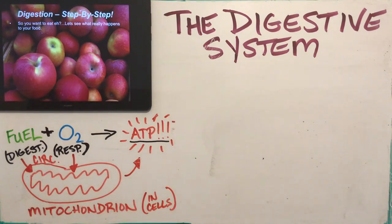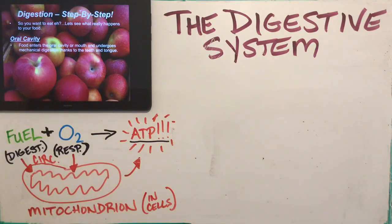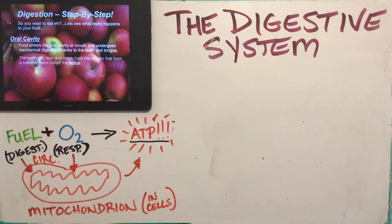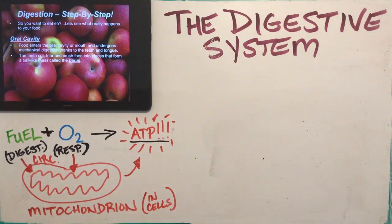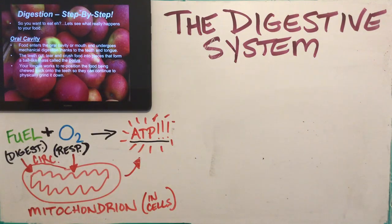Now we'll go through the digestive system step by step, looking at each part and its function. The first is the mouth, or oral cavity — that's a fancy word for mouth — and this is where food enters the body. You chew it up; the tongue repositions the food on the teeth, and the teeth tear, cut, and crush the food into pieces that form a ball-like mass called a bolus. Your tongue repositions the food so your teeth can continue to grind it down.